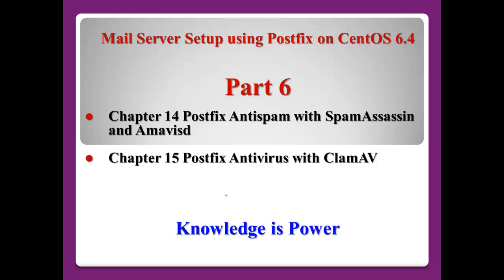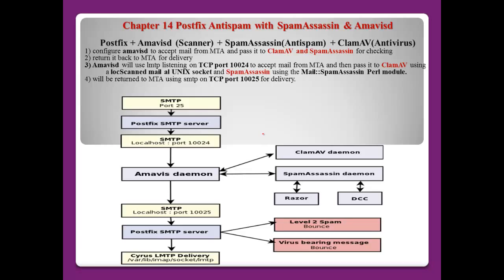Now let's begin Part 6. In this part I will explain the Postfix anti-spam with SpamAssassin and Amavis in Chapter 14, and the antivirus with ClamAV in Chapter 15. So here I will show you how to configure Postfix, Amavis, SpamAssassin, and ClamAV. Postfix is the MTA, Amavis is a kind of scanner, SpamAssassin is the anti-spam program, and ClamAV is the antivirus program.